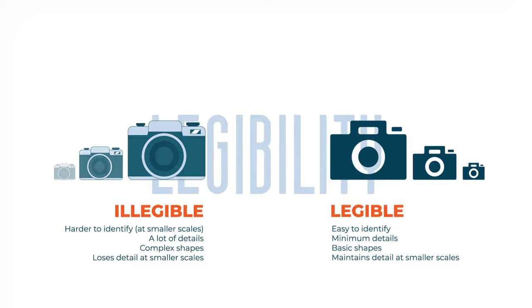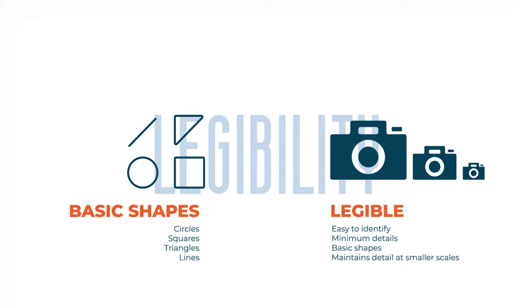So what are the tricks to design legible icons? In order to keep icons as legible as possible, always use basic shapes when designing. For basic shapes we have squares, triangles, circles, and lines. Combining these shapes together, you can create almost any icon.